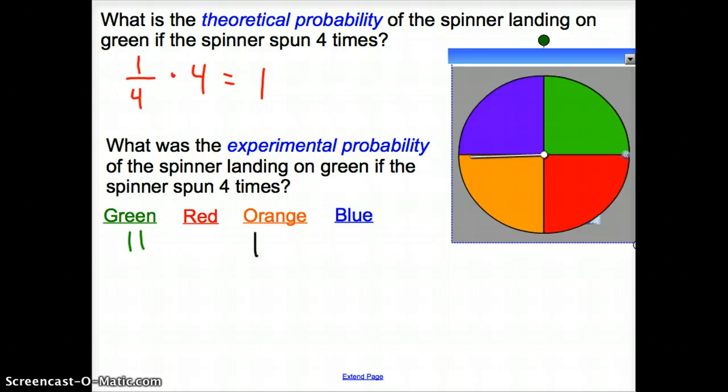So is theoretical probability always going to be right? No, it's not, because it doesn't have to happen every single time. Over a lot of cases, over performing this experiment, a hundred, a thousand, a million times, it's going to get closer to that theoretical probability of that one-fourth, or happening a quarter of the time.